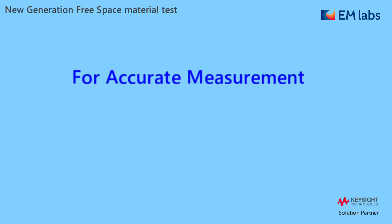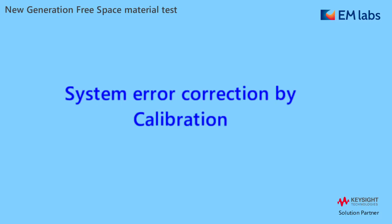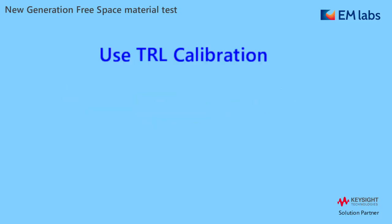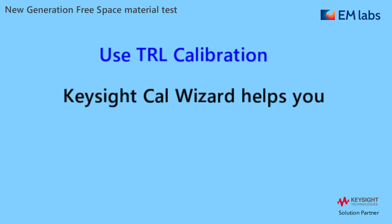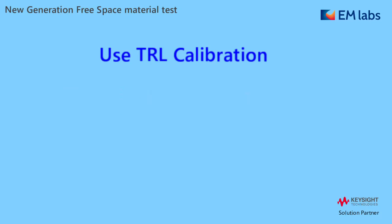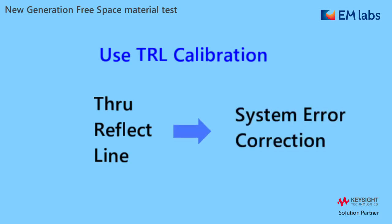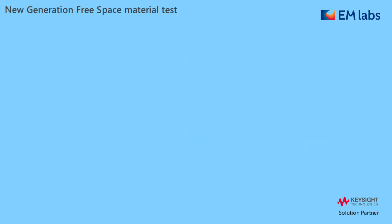For accurate measurement, proper system error correction by calibration is key. We use TRL calibration of the network analyzer for that. The process was rather complicated before, but with the Keysight CAL wizard, you can calibrate easily without any problem. In TRL calibration, through, reflect, and line — three conditions are measured and used to correct system errors.